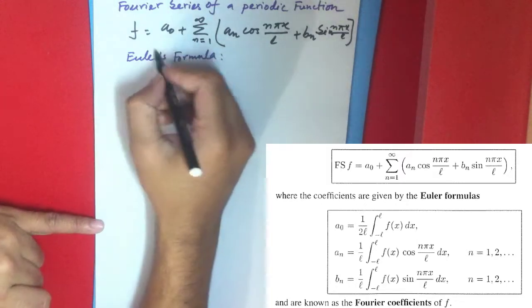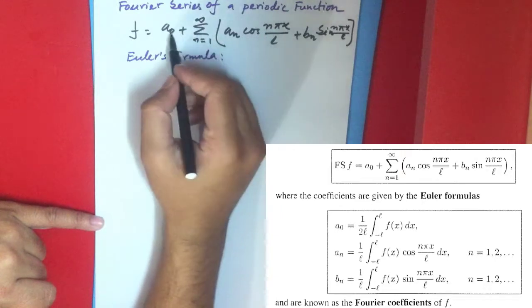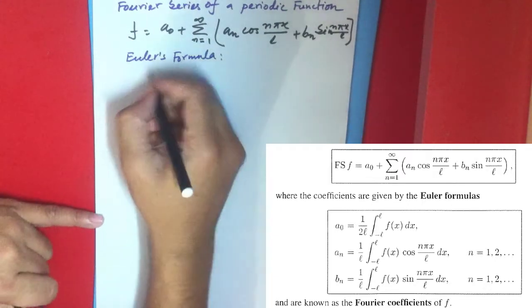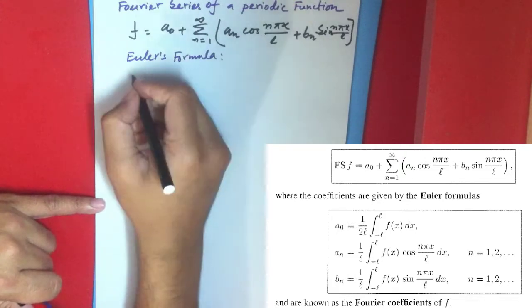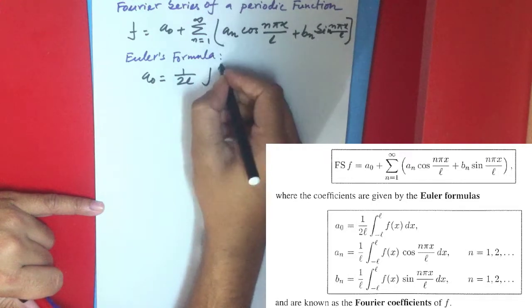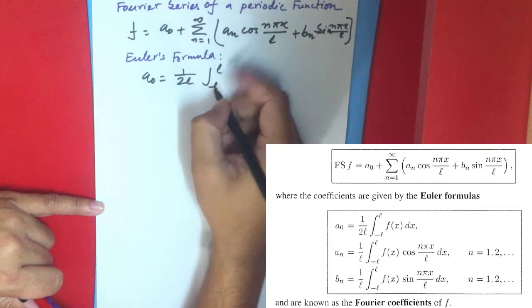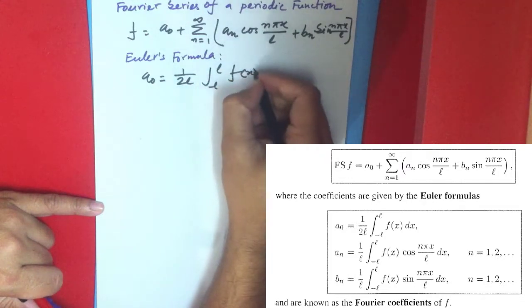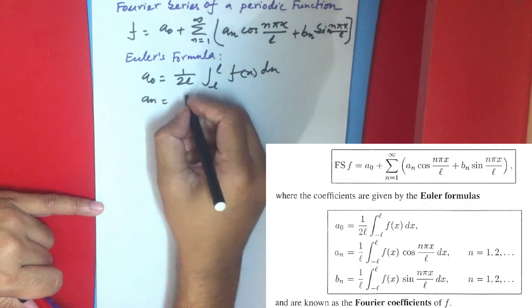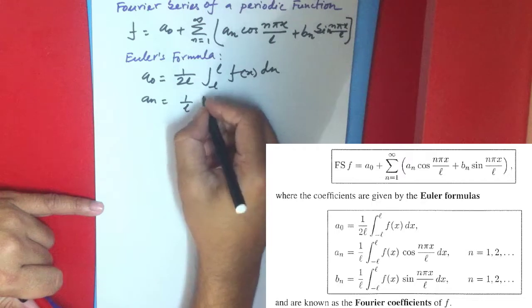The values a₀, aₙ, and bₙ are given by Euler's formulas. a₀ equals 1/(2L) times the integral from -L to L of f(x) dx. aₙ equals 1/L times the integral from -L to L of f(x) cos(nπx/L) dx.